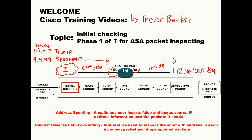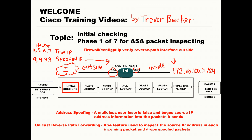Remember, unicast reverse path forwarding can only detect spoofed addresses when those spoofed addresses are between two separate interfaces on the Cisco ASA. The reason why is when it does a route lookup, it'll show that it failed because the route for that source IP address belongs on a different segment than it came from. Also remember that unicast reverse path forwarding is not enabled by default on a Cisco ASA.